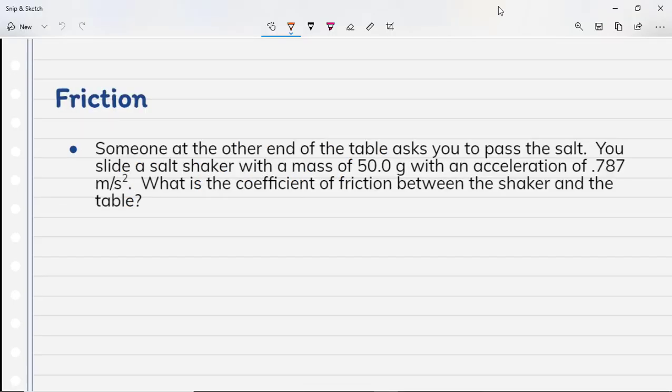Someone at the other end of the table asks you to pass the salt. You slide a salt shaker with a mass of 50 grams with an acceleration of 0.787 meters per second. What is the coefficient of friction between the shaker and the table? So we've got a couple formulas we need to keep in mind here. Remember that the force is going to be equal to coefficient of friction times the normal force.